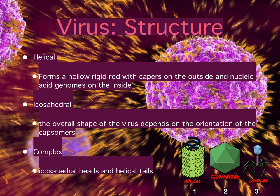Virus structure continued. There are three virus structures: helical, icosahedral, and complex. Helical structures form a hollow, rigid rod with capsomers on the outside and nucleic acid genomes on the inside — the longer the rod, the longer the genome. Icosahedral structures have the most efficient arrangement of capsomers in a closed shell. The shape of the virus usually depends on the orientation of the capsomers. And last but not least, there is a complex structure in which the head of the virus is icosahedral and the tail is helical. Three diagrams depicting each structure are located at the bottom right of your screen.